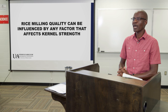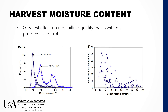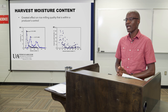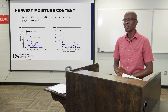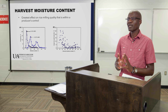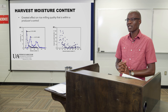Harvest moisture content is one of those factors that is really at the producer's control in the whole chain of rice processing. I'm illustrating two figures here to show some of the results obtained in the lab for rice moisture content — for rice that has been harvested at different moisture contents.